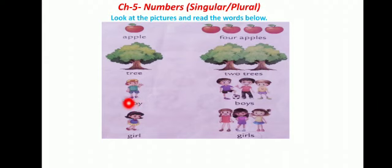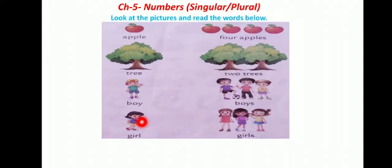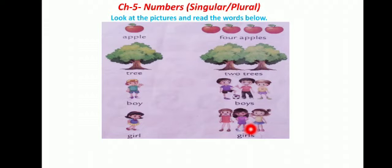Next is boy. This is the picture of a boy — it's singular. The plural side shows three boys, so you write B-O-Y, boy, and add S behind it. So the plural form of boy is 'boys'. Same here — next picture is girl. You write G-I-R-L, girl, and there are three girls, so you add S behind it. The plural form of girl becomes 'girls'.